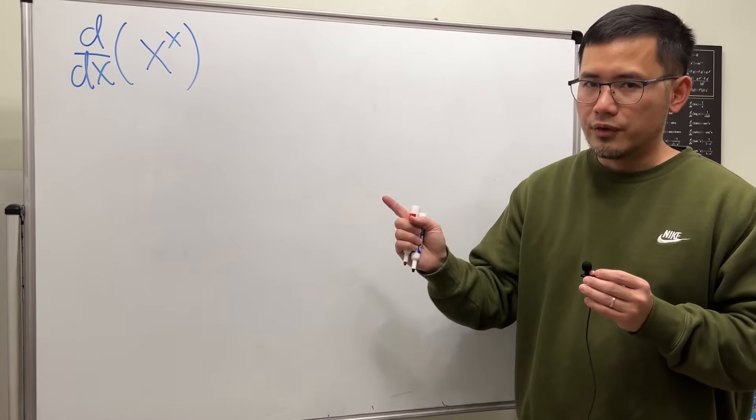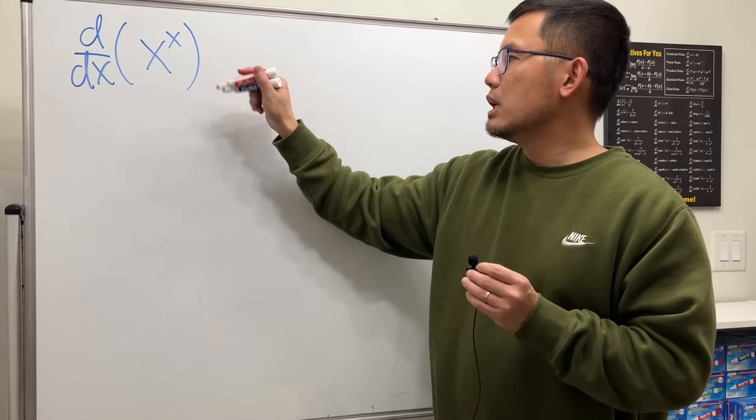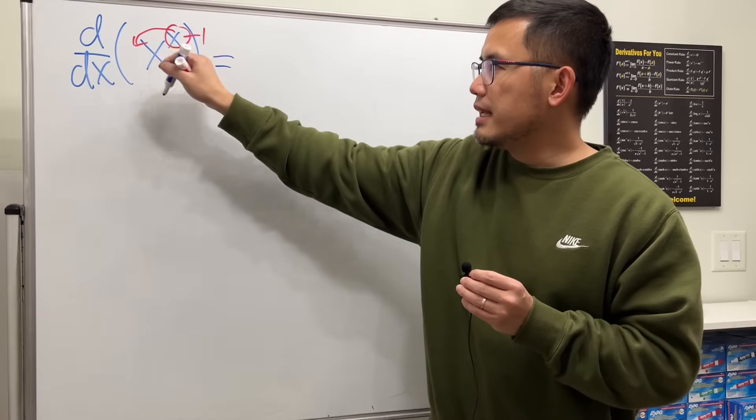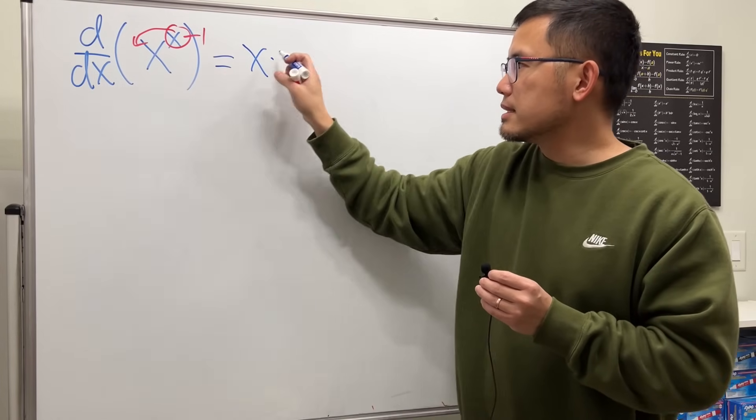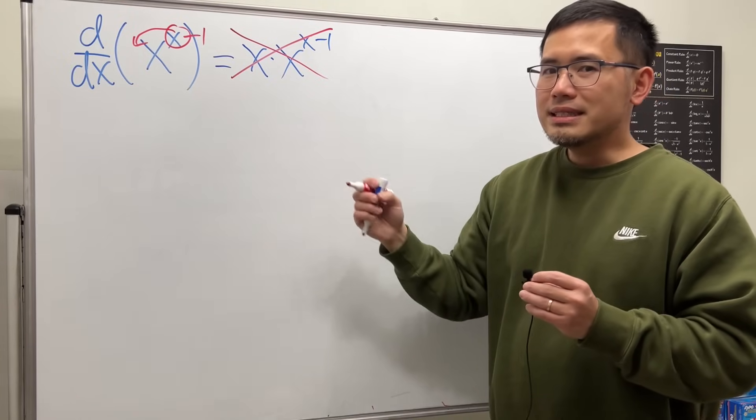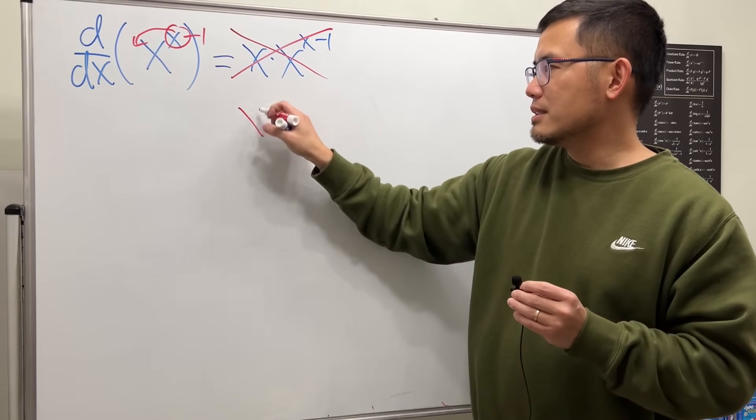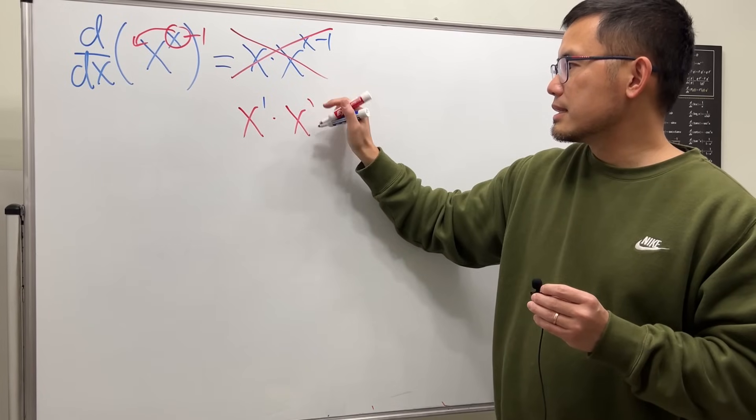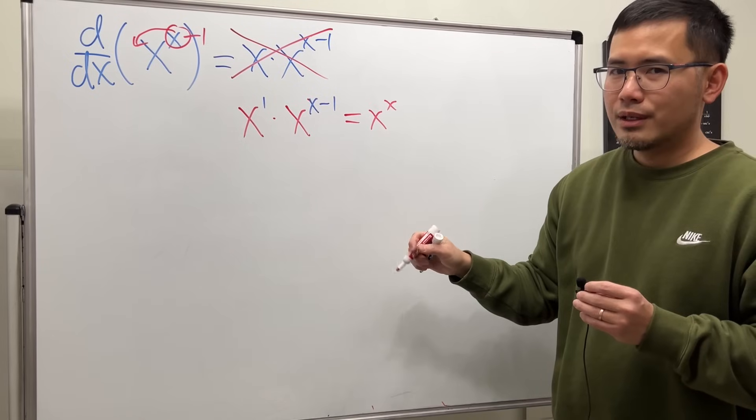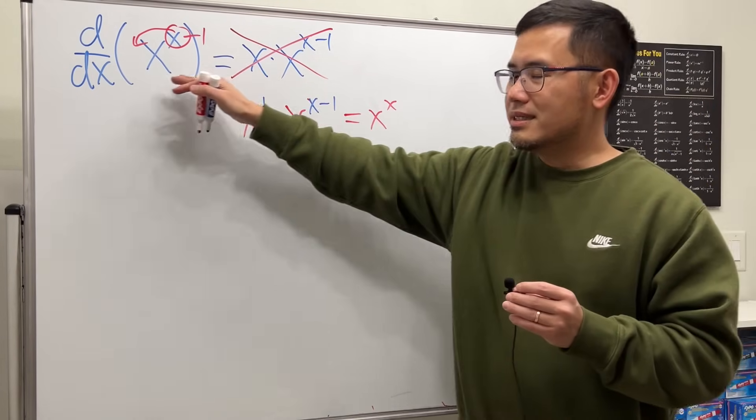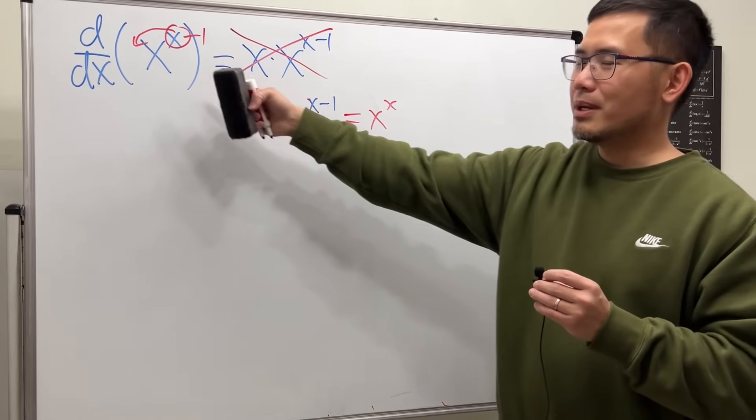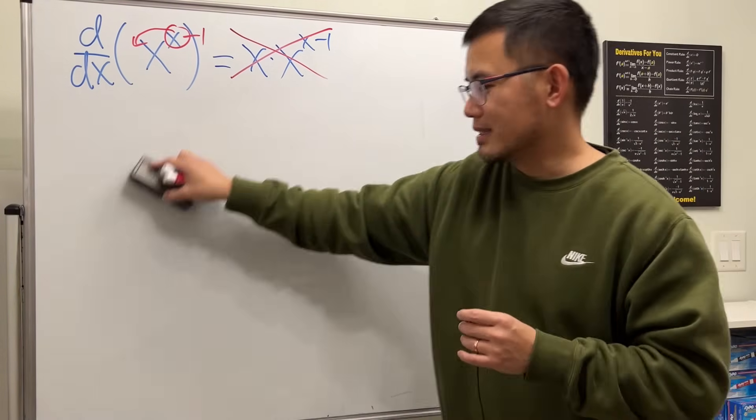We cannot use the usual power rule for this. When we see x to the x power, if you just put the power to the front and then minus 1 and say the answer is x times x to the x minus 1, this is incorrect. It's not that we didn't simplify it. I know this is x to the first power times x to the x minus 1 power. We can add the exponents and say that's just x to the x power, but it's not the algebra, it's the calculus issue that's important. By the way, if you do this, you get back to the original. That's kind of cool, but it's wrong already, so it doesn't matter anymore.